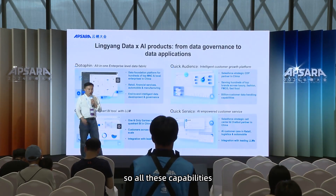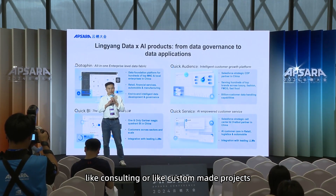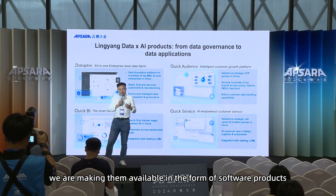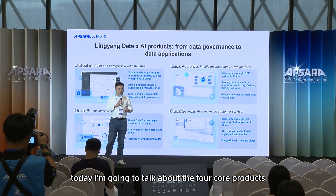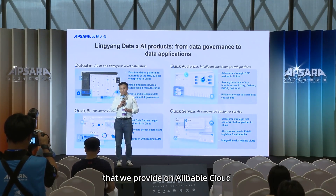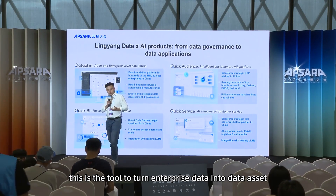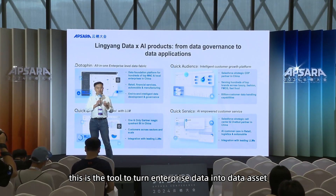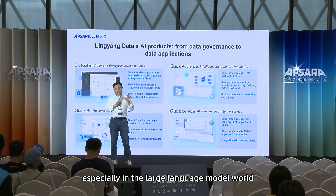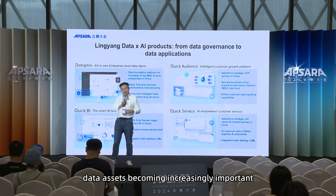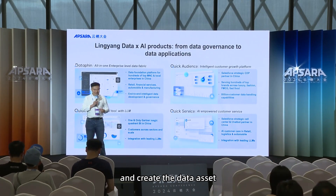We are not doing heavy-lifted consulting or custom-made products — we are making them available in the form of software products. Today I'm going to talk about the four core products we provide on Alibaba Cloud. Number one is our unified data fabric, which we call DataFin. This is a tool to turn enterprise data into data assets and help manage them — especially important in the large language model world.